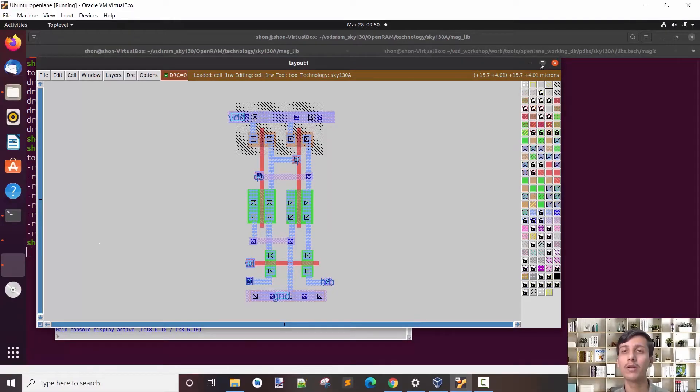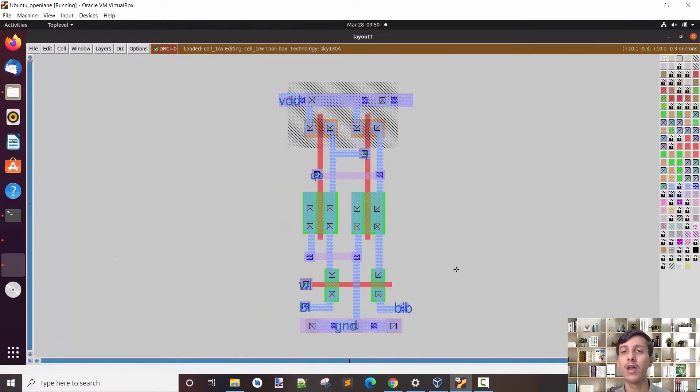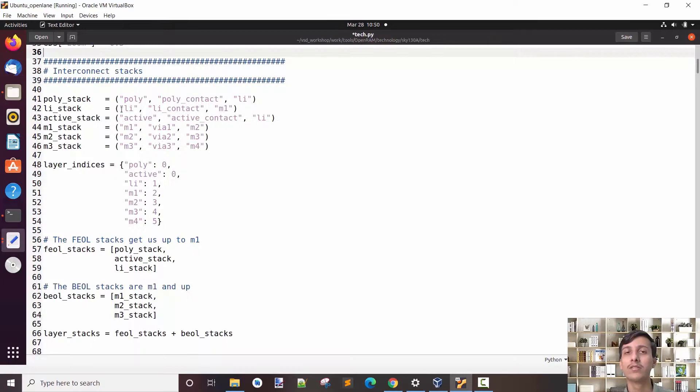These are the two cross-coupled inverters and the below 2 MOS are the access transistors. Same goes with the M1, M2 and M3 stack. M1 connects M2 through the VR1, M2 connects M3 through the VR2 and M3 connects M4 through the VR3.